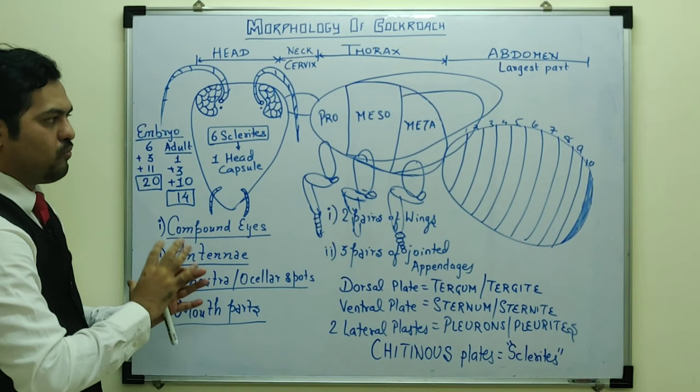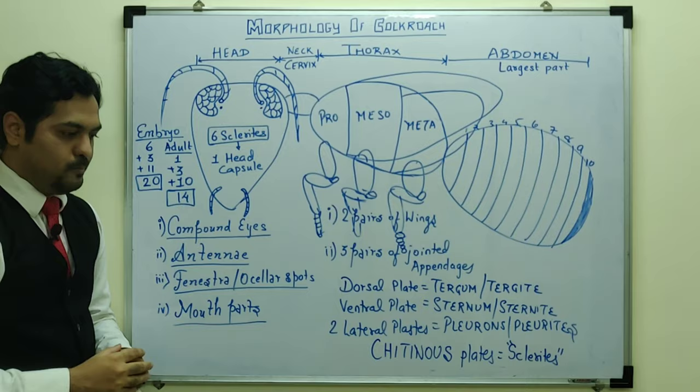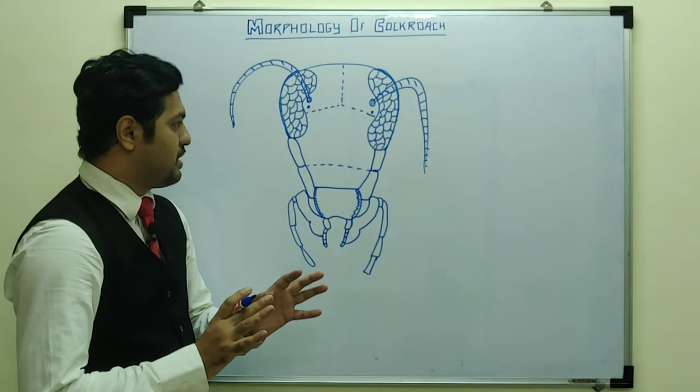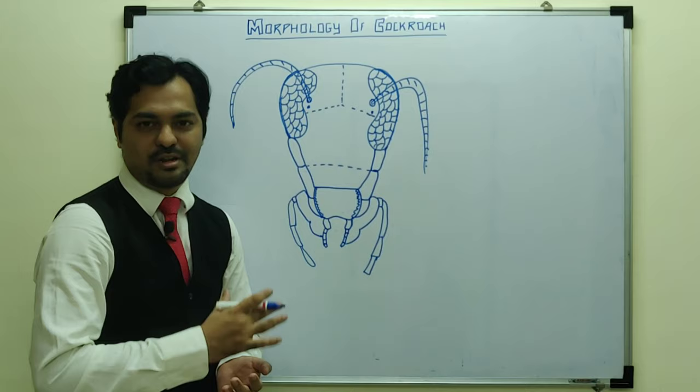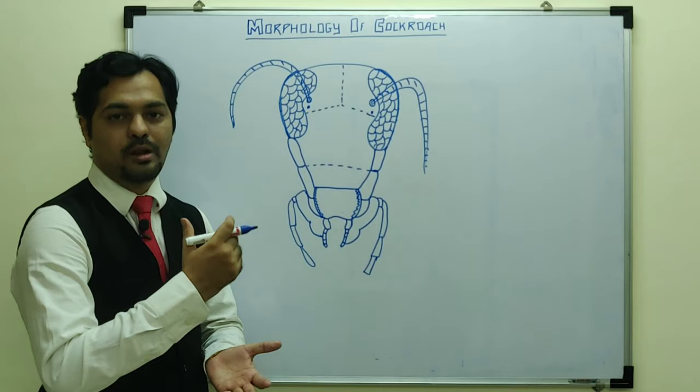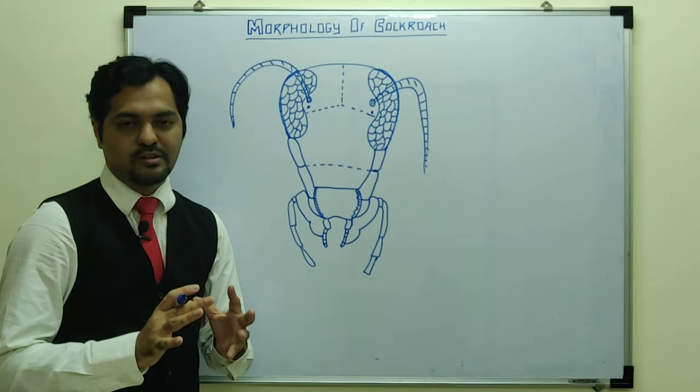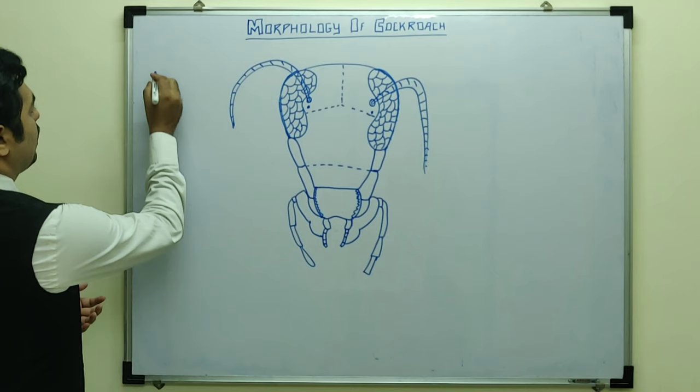Now let's focus on the head part in detail. You can see the head region diagram, which is represented in some detail. Pause the video, draw the diagram, and slowly understand the parts as labeling is done. First, we'll cover the basic points, and then some exam-related points will be discussed. The four structures to discuss in the head are: compound eyes, antennae, ocular spots, and mouth parts.